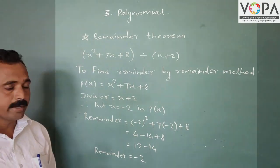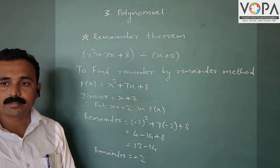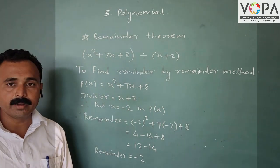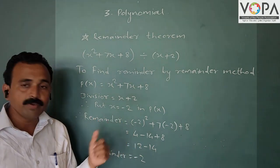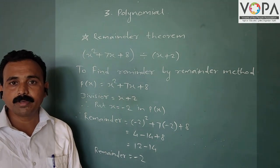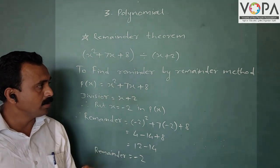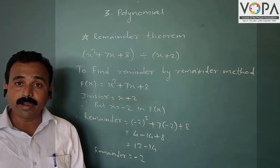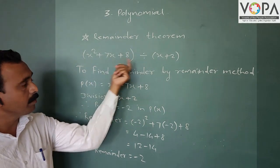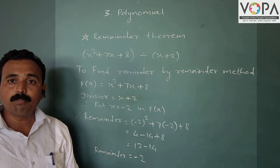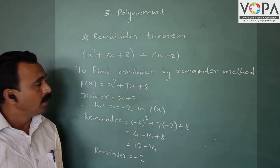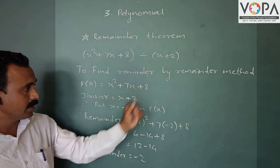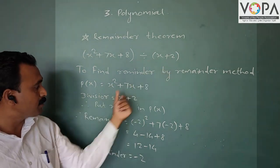In the last video, we saw the Remainder Theorem — how to find the remainder. We found the remainder by the actual division method and synthetic division method using the same example. Now here, we find the remainder by the Remainder Theorem. The relation between the Remainder Theorem and the value of a polynomial is used. The dividend is x² + 7x + 8 and the divisor is x + 2.